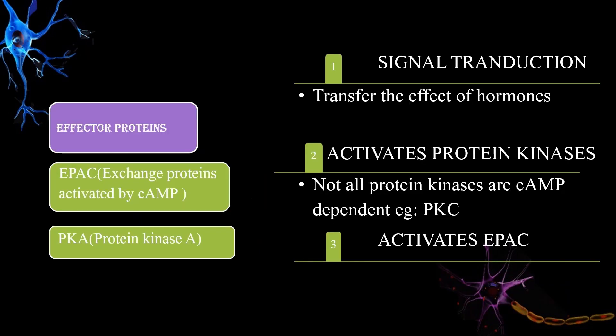The major effector proteins of cAMP are EPAC — exchange proteins activated by cAMP — and protein kinase A. So the major functions involve the activation of these effector proteins, that is the protein kinases and the EPACs, thereby transducing the signals.